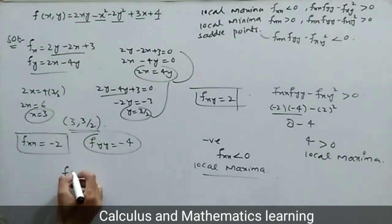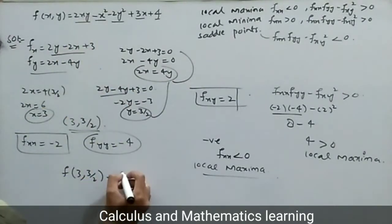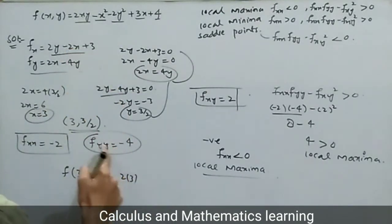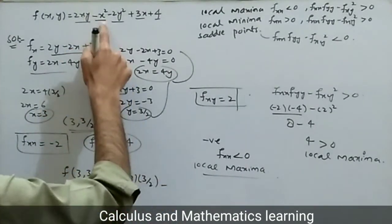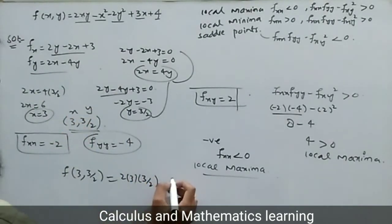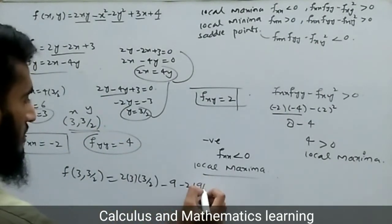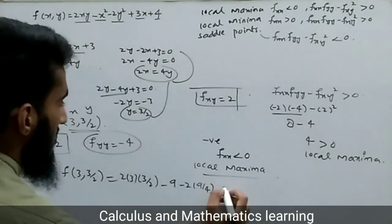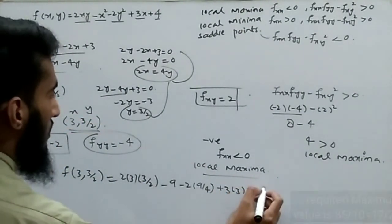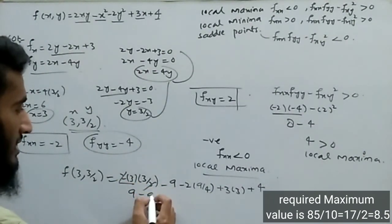Now finding the maximum value at the critical point x = 3, y = 3/2: f(3, 3/2) equals 2 times 3 times 3/2 minus 3 squared minus 2 times (3/2) squared plus 3 times 3 plus 4, which equals 9 minus 9 minus 2 times 9/4 plus 9 plus 4. By simplification this gives approximately 9 minus 9 plus the remaining terms.